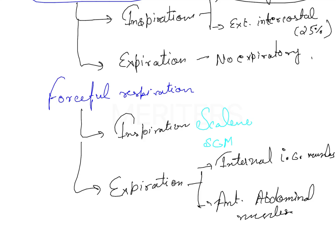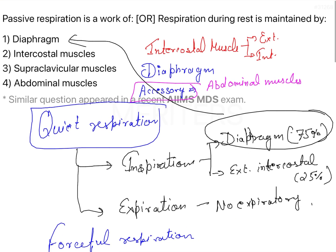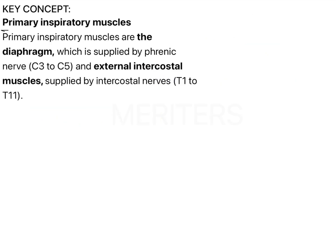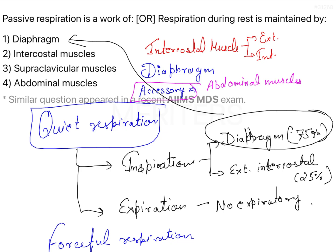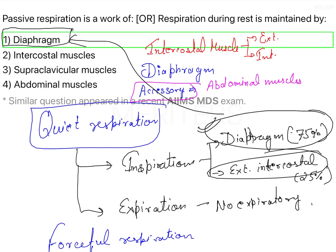These are the various muscles and their role in quiet breathing as well as forceful respiration. Quickly walking through the key concepts: the primary inspiratory muscles are the diaphragm, supplied by the phrenic nerve (C3 to C5), and the external intercostal muscles, supplied from T1 to T11. The diaphragm contributes 75 percent and the external intercostal contributes 25 percent, so you select diaphragm over intercostal muscles as the most specific answer.